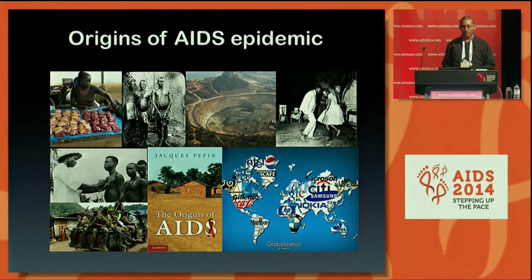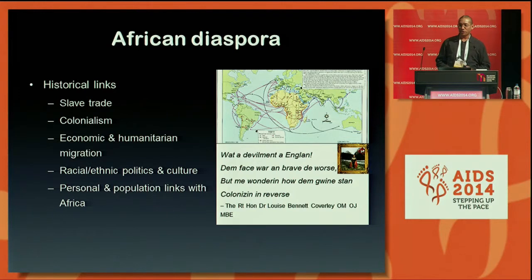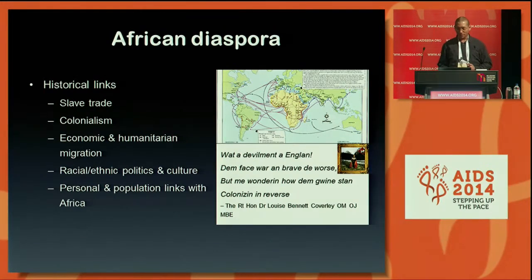With globalisation, Africa is no longer just in Africa. The African diaspora of course links back with the slave trade — both transatlantic and the Indian Ocean slave trade moved African people from Africa to other parts of the world. With time and changing relationships between colonial countries and their former colonies, a lot of the flows tended to be more voluntary, seeking employment. That poem by Louise Coverley is a classic description of that reverse colonisation of West Indians going to the UK.